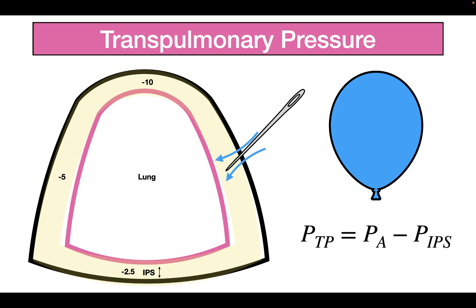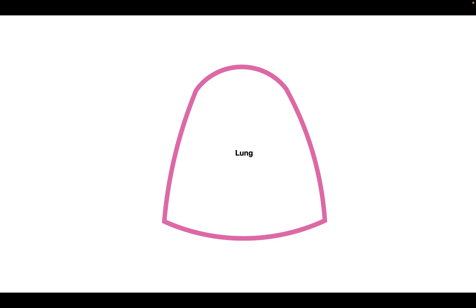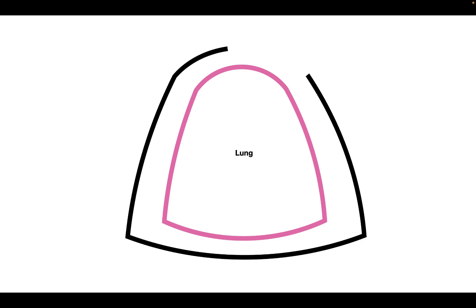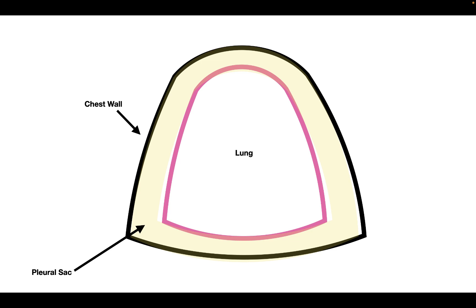Hello everyone, welcome to 10 Minute Physiology. In today's video, we're going to talk about transpulmonary pressure. I'd like to start off by giving you a simplified diagram of the chest cavity. Inside our chest, we have our lungs, and the lungs are going to be surrounded by two things: the outer part is the chest wall, and the inner part is the pleural sac. Now inside the pleural sac, we have the intrapleural space, which is going to have a certain pressure inside of it.